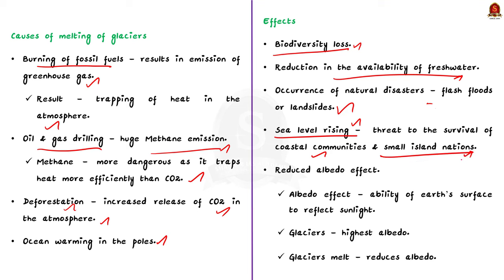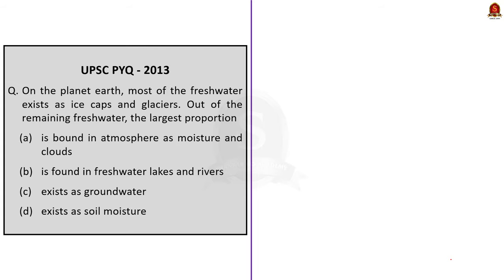Finally, glacial melting results in a reduced albedo effect. The albedo effect is the ability of an Earth surface to reflect sunlight. Glaciers have the highest albedo on the Earth's surface, so if they melt, it reduces Earth's ability to reflect sunlight back into space, leading to increased absorption of solar radiation and further contributing to global warming. That's all regarding this discussion on melting glaciers.